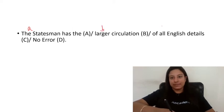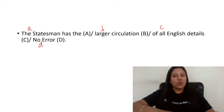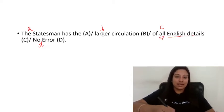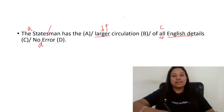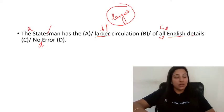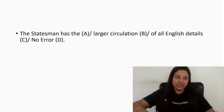Next: 'The Statesman has the larger circulation of all English dailies.' Since we are talking about more than two — 'all' means more than two, whereas 'both' refers to two — we use the superlative degree. So 'largest' will come here, not 'larger'.